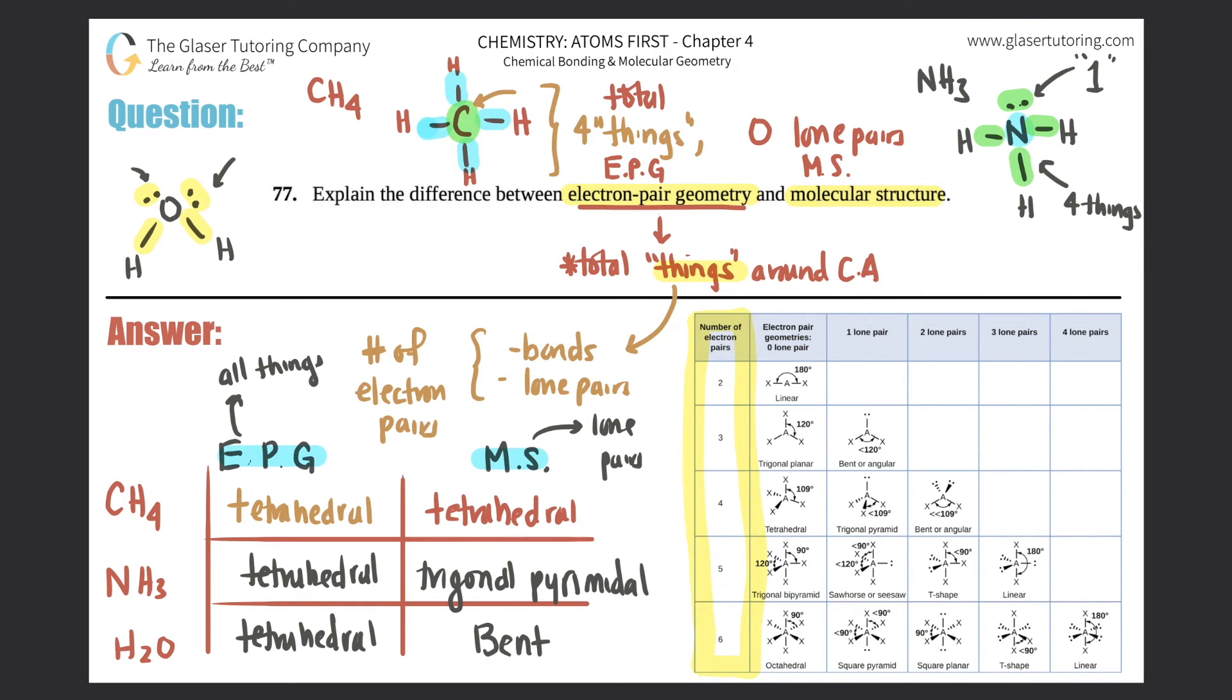And there you go. So as you can see, the electron pair geometry for these three molecules are the same, but the molecular structure is different, and that's the difference between them. So electron pair geometry focuses on how many total electron pairs, total things around the central atom, while the molecular structure focuses on, you could either say the lone pairs around the central atom or the total atoms. Either one is correct.